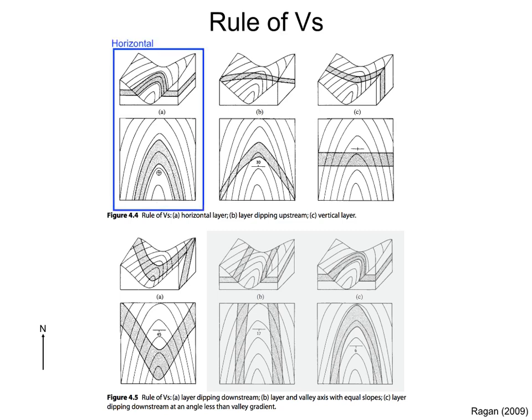Let's start with a horizontal layer. In this case, the outcrop trace of the layer follows the topographic contours. This makes sense because the intersection of a horizontal plane with topography is a topographic contour. Remember, the outcrop trace of a horizontal layer follows the topographic contours.